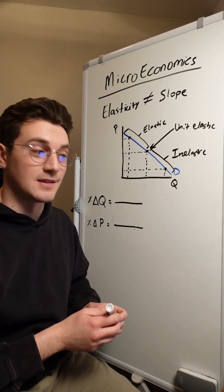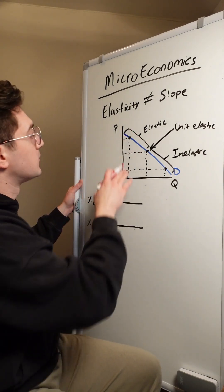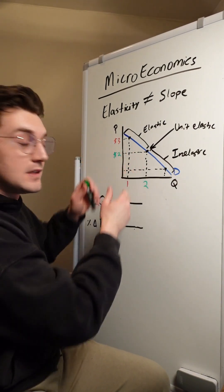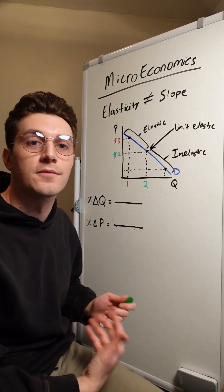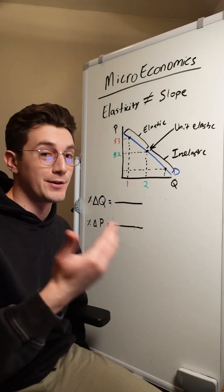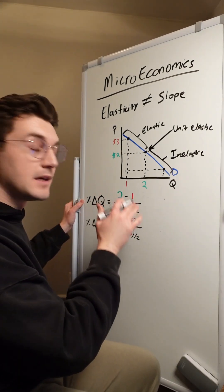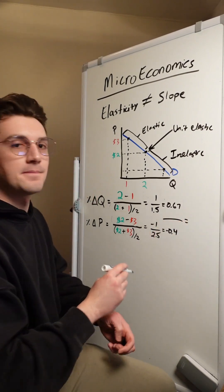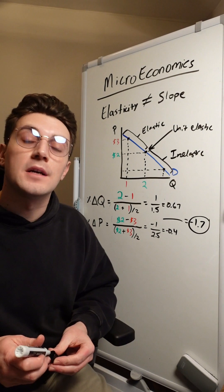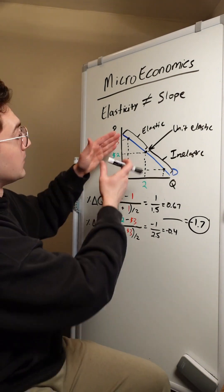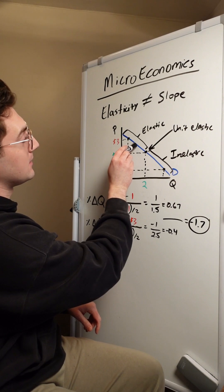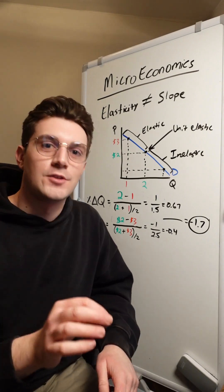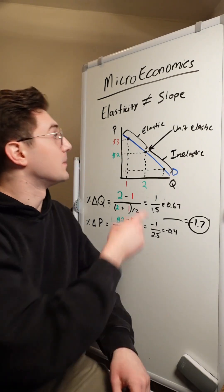Let's see this in action and prove it, starting with the elastic region. We'll move between this point, marked in red, and this point, marked in green. Plugging both into the midpoint method formula — it doesn't matter which order you put them in, you'll get the same value — I get this value for my numerator and this for my denominator. Dividing gives negative 1.7 as my price elasticity of demand between these two points. Notice their midpoint falls in the top half of the demand curve.